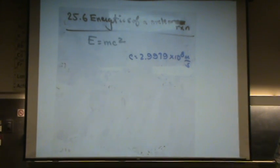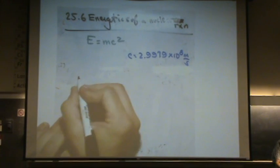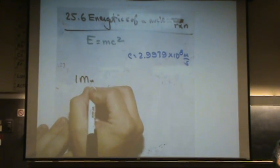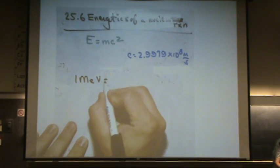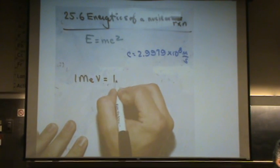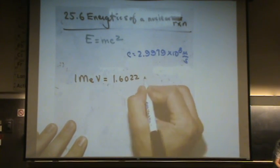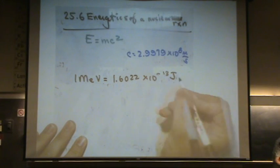Before we do an example problem so you can see how this works, I need to give you a couple of conversions. These will be given on the test, the relevant ones. One mega electron volt is 1.6022 times 10 to the minus 13 joules.